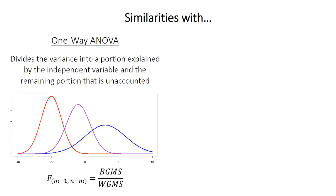A factorial ANOVA obviously has similarities with regular ANOVA, technically called one-way ANOVA, in that both divide the total variance into portions explained by the independent variable — the between groups mean square — and a remaining unaccounted portion called the within groups mean square. The statistical significance is calculated as the ratio of those two portions.